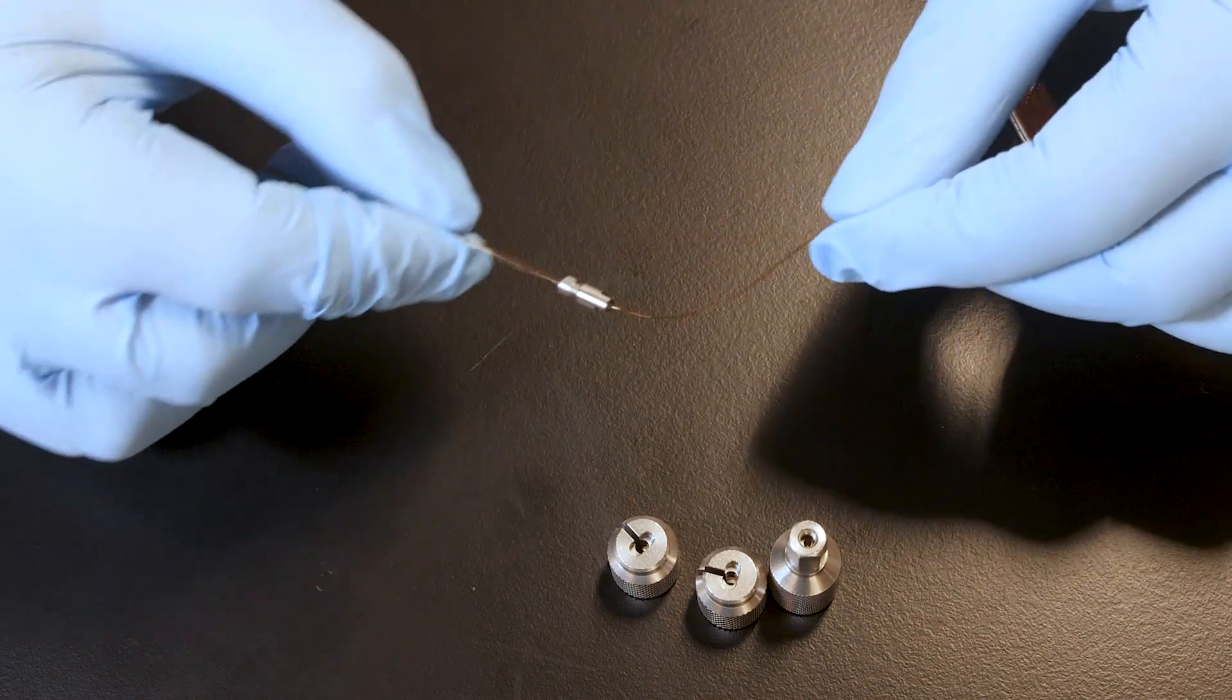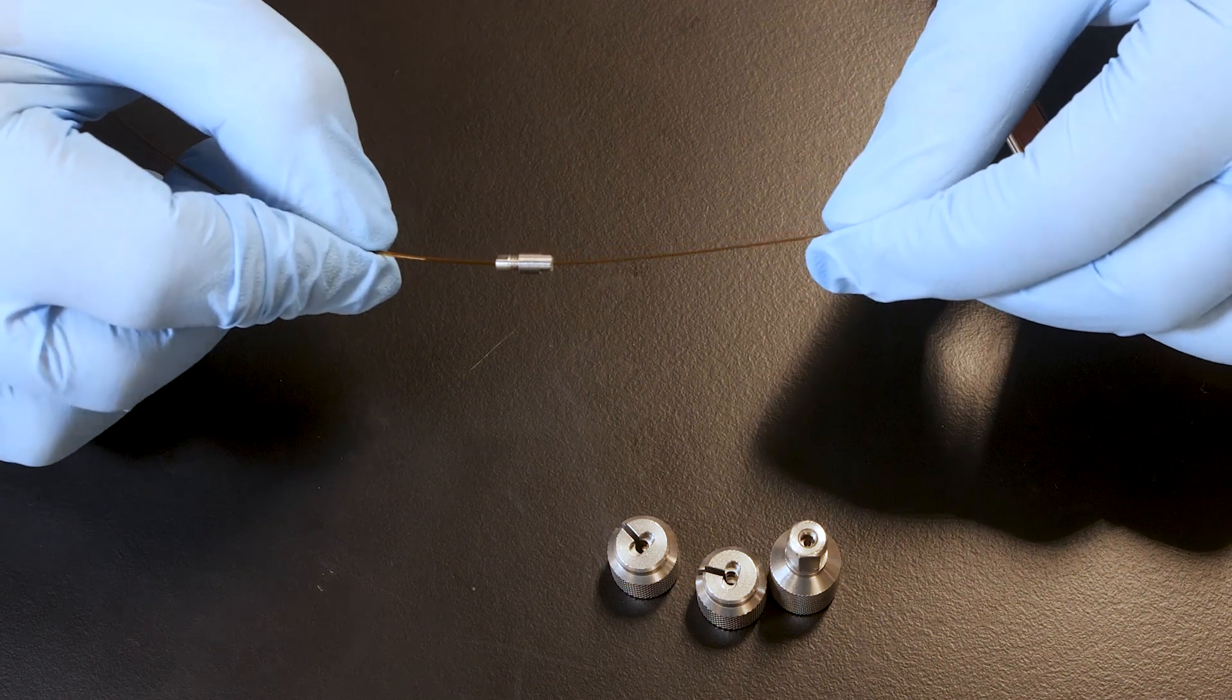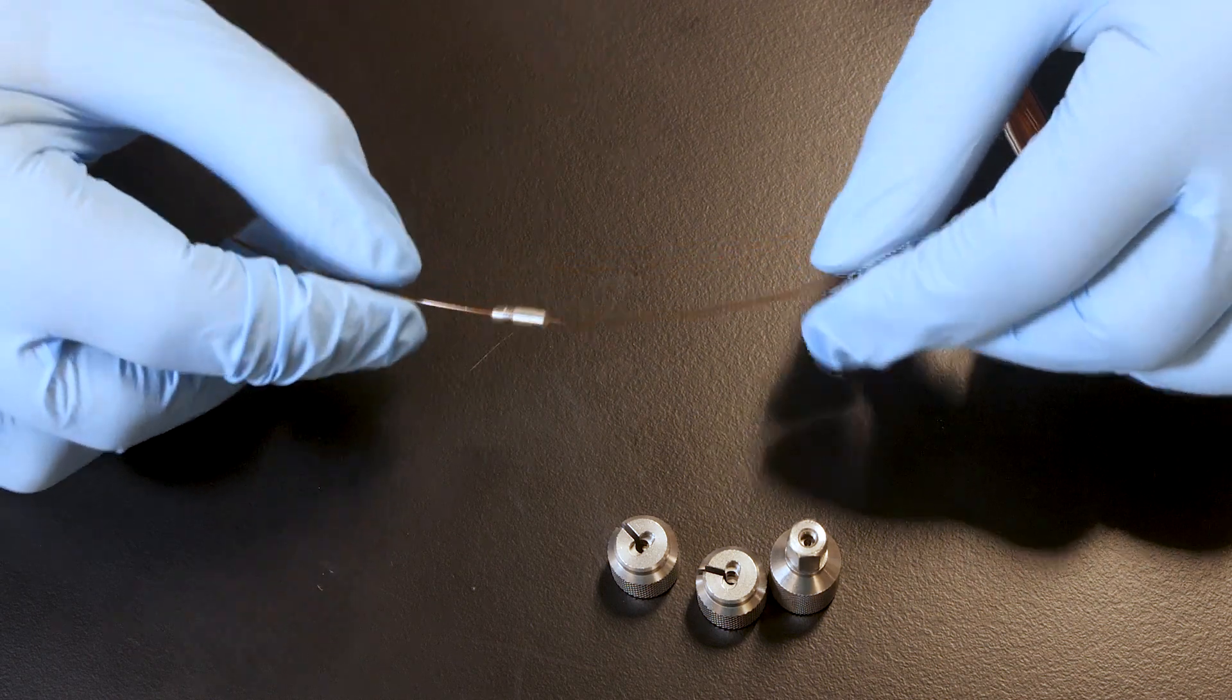When you need to connect two silica capillary columns, a reliable connection is essential. Designed to deliver an inert, dead volume-free connection that won't contribute to peak broadening or raising detection limits, the Siltite Microunion Connector is the perfect tool for the job.